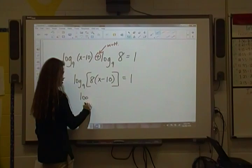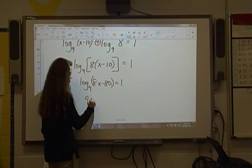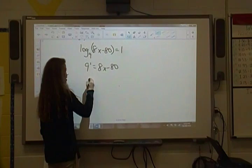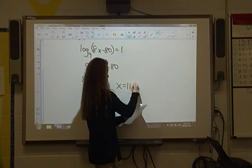So I'm going to distribute those. Log base 9 of 8x minus 80, and set that equal to 1. And now I'm going to switch forms. So I have a base of 9. My exponent's 1. Set that equal to 8x minus 80. And then I'll add the 80 over. So I have 89 is equal to 8x. Divide by 8. So x is equal to 11.125.